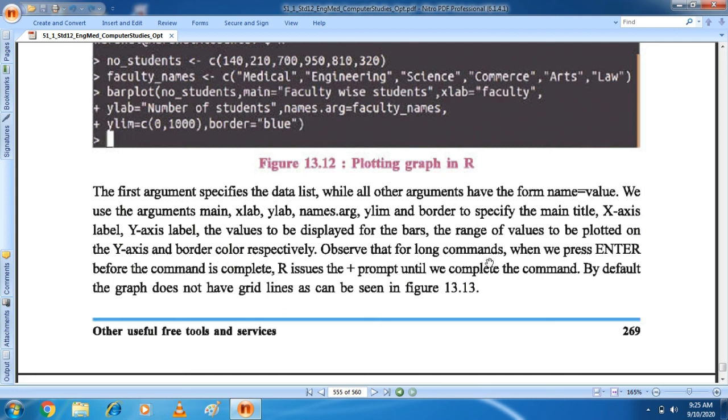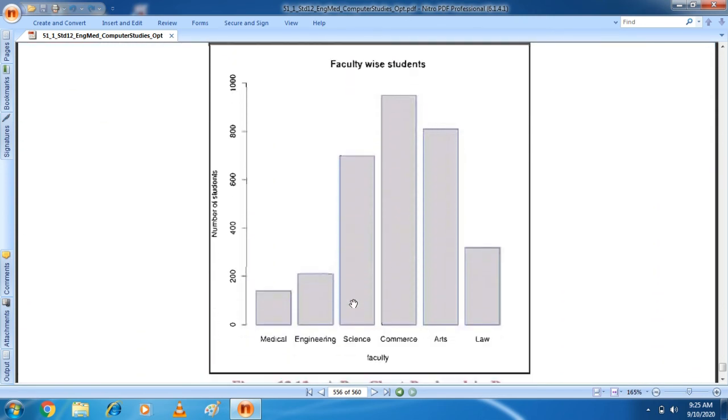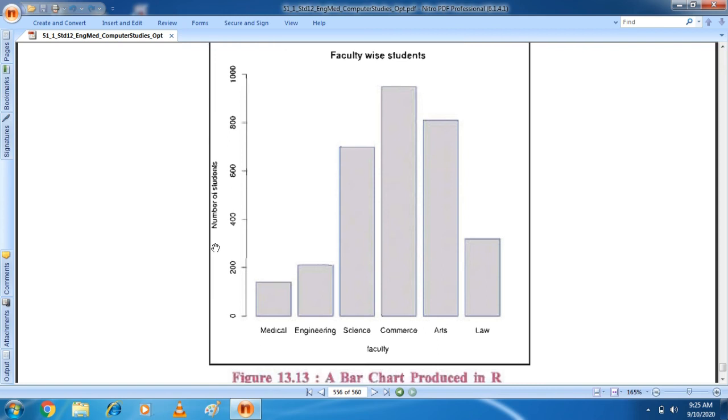The first argument specifies the data list while all other arguments have the form name equal to value. We use the argument main, x-lab, y-lab, names argument, y-lim and border to specify the main title, x-axis label, y-axis label, the values to be displayed for the bar, the range of values to be plotted on the y-axis and border color respectively. Observe that for long command, when we press enter before the command is complete. If you want to write long command, when we enter, it will execute. R issues the plus prompt until we complete the command. By default, the graph does not have a grid line as can be seen in figure 13.13. Students, if you use the graph, it has a grid line, right? And on that basis you can draw a bar plot. But here in R software, there is no graph in the background. You can write command here and on that basis you can draw a bar plot.